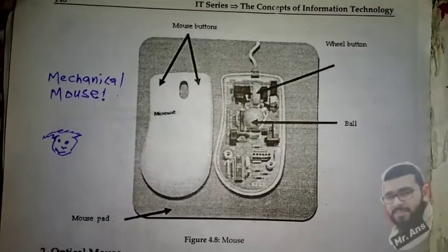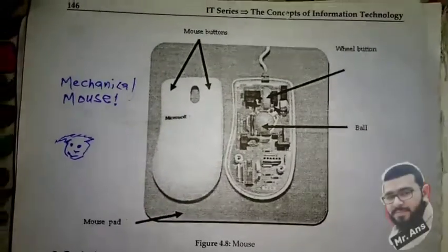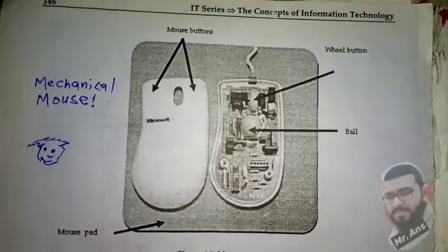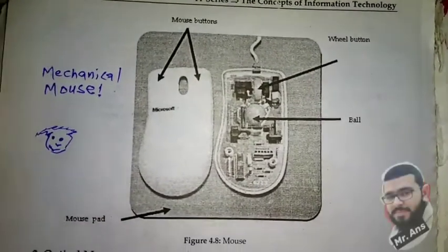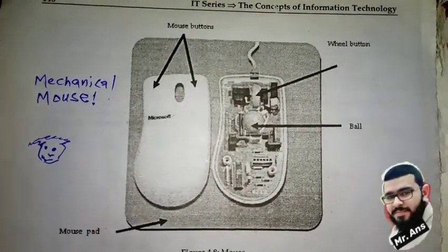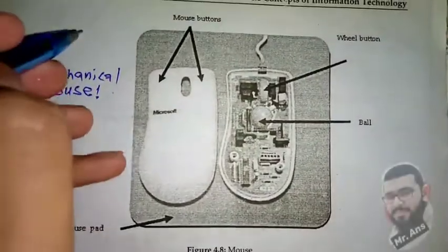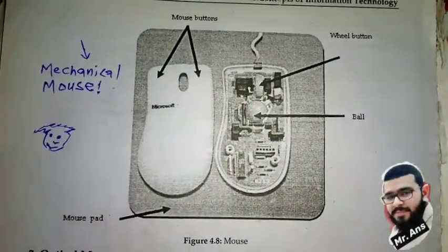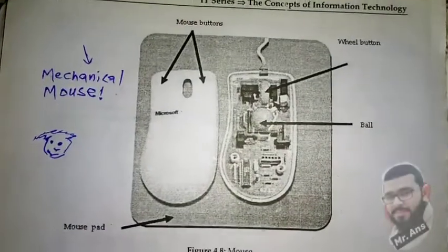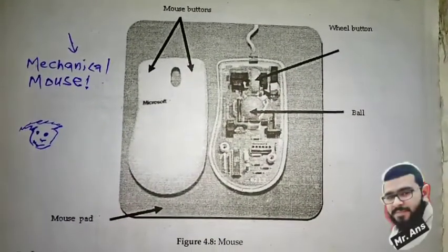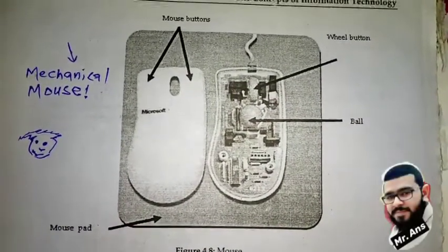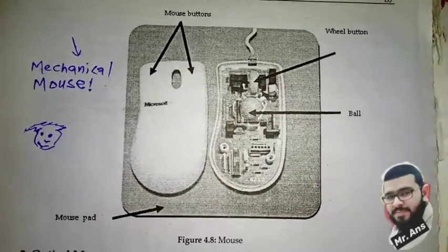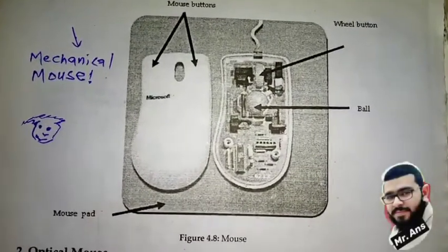Hi, this is Mr. Uns channel on YouTube. In this video we have a topic on different pointing devices. First of all, a mouse is a pointing device which is used to control the position of the cursor on the screen.